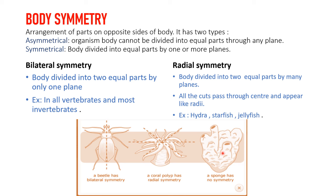In symmetrical, the body is divided into equal parts by one or more planes. It is divided into two types: bilateral and radial. In bilateral symmetry, the body is divided into two equal halves by only one plane. It is present in vertebrates and most invertebrates.